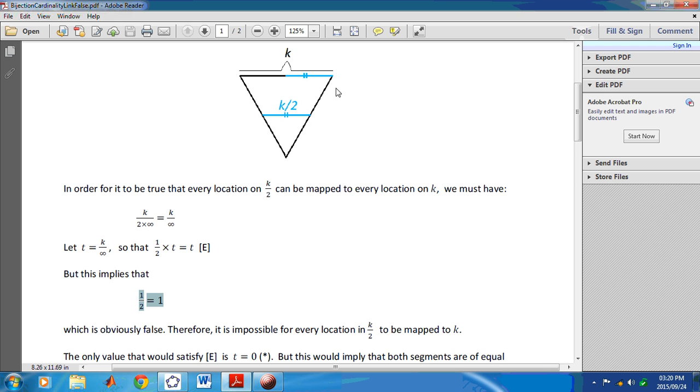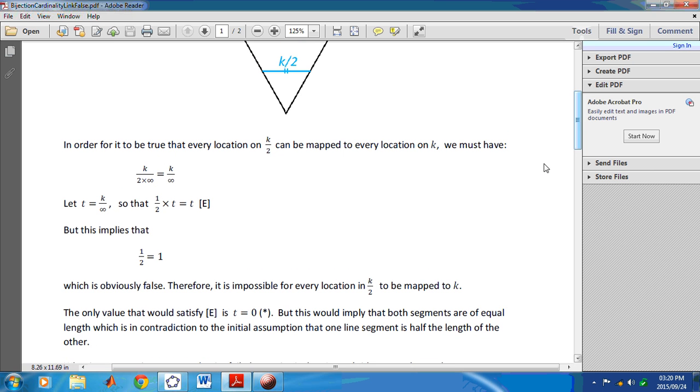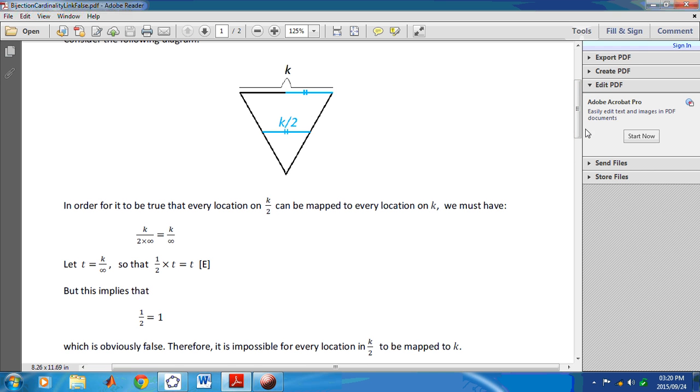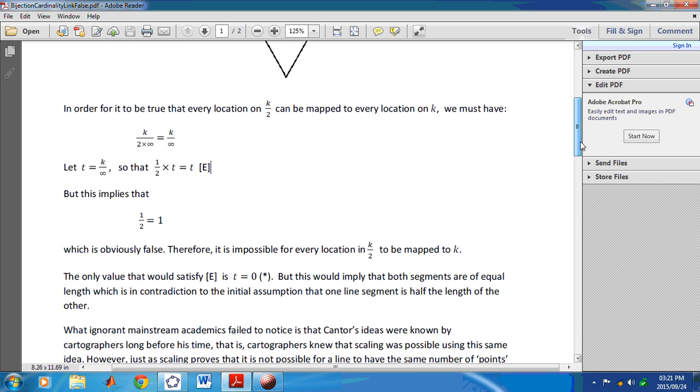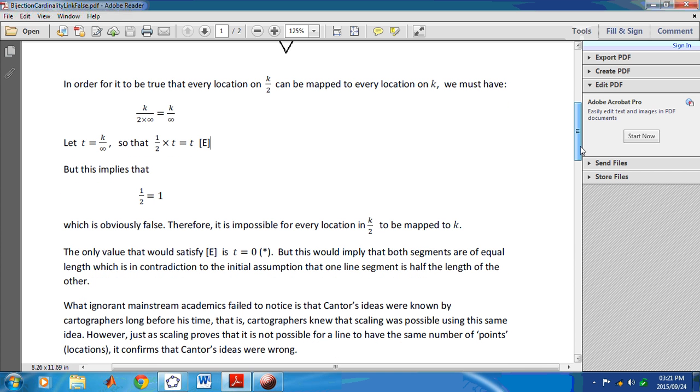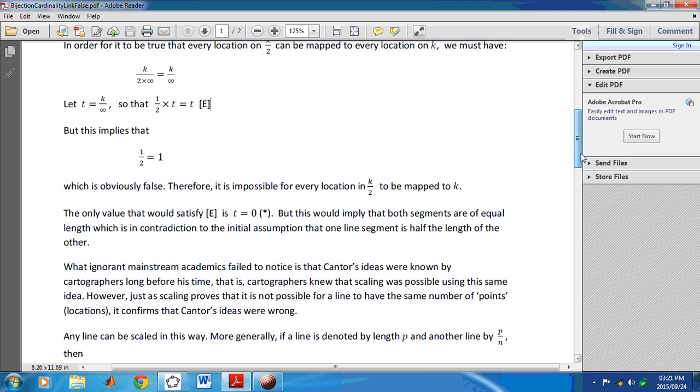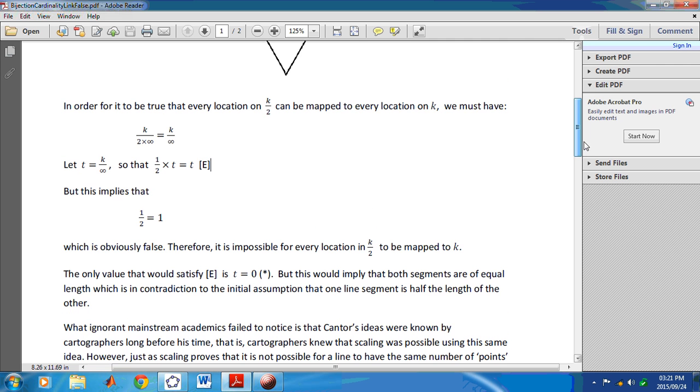Now, all this tells us is that there's been a scaling from this line to this line, or vice versa. In other words, this line here is exactly twice this line, or this line is half this line. That's all it's saying. The only value that would satisfy this identity here is 0, because half times 0 is equal to 0. But that would imply that both segments, these segments here, are both equal to what? Both equal to 0, or of equal length, right? Which is a contradiction to the initial, which is in contradiction to the initial assumption that one line segment is half the length of the other.